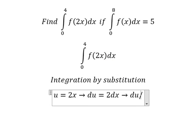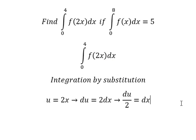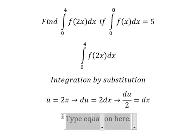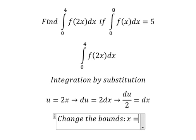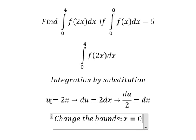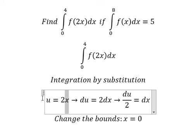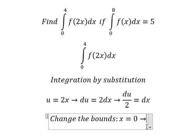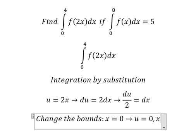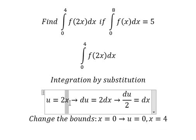Next, we need to change the bounds. When x equals to number zero, we put number zero in here and we can find the value of u equals to number zero.